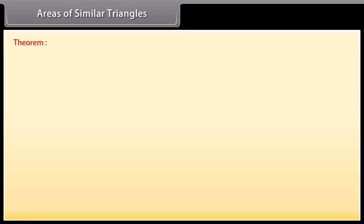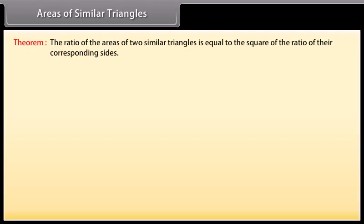Areas of similar triangles. Theorem: The ratio of the areas of two similar triangles is equal to the square of the ratio of their corresponding sides. Let us prove this theorem.